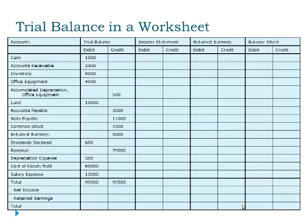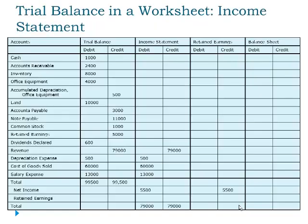If we're going to create an income statement from this trial balance, we will take the information from the trial balance column and move just those accounts that pertain to the income statement over to the next column. When we do so, the revenue, depreciation expense, cost of goods sold, and salary expense columns are moved over.